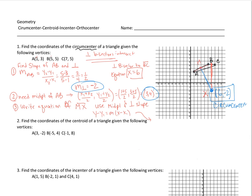This gives us y − 4 = −2(x − 3). We already know from the perpendicular bisector of BC that x = 6, so we plug in 6: y − 4 = −2(6 − 3) = −2(3) = −6. Therefore y = −6 + 4 = −2. So the circumcenter is at the coordinate (6, −2).